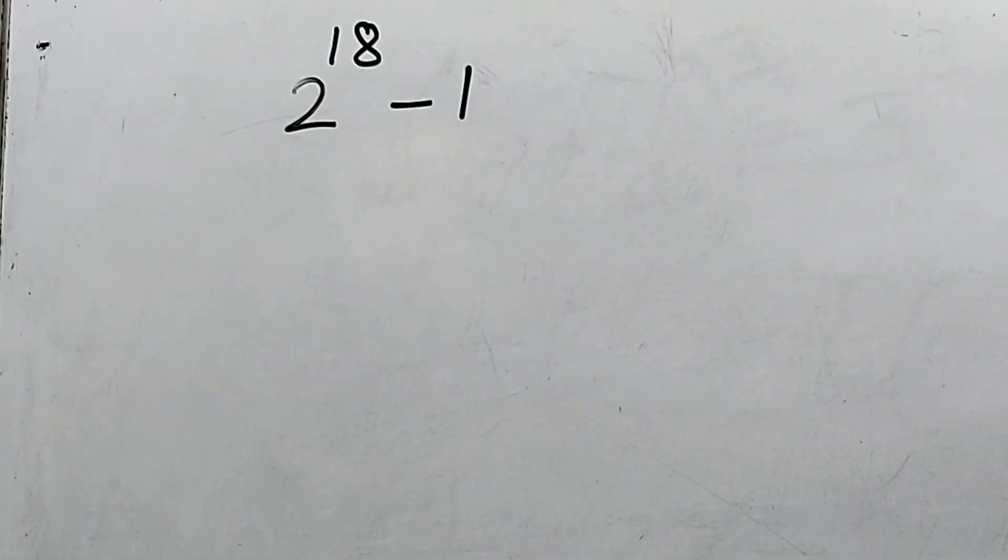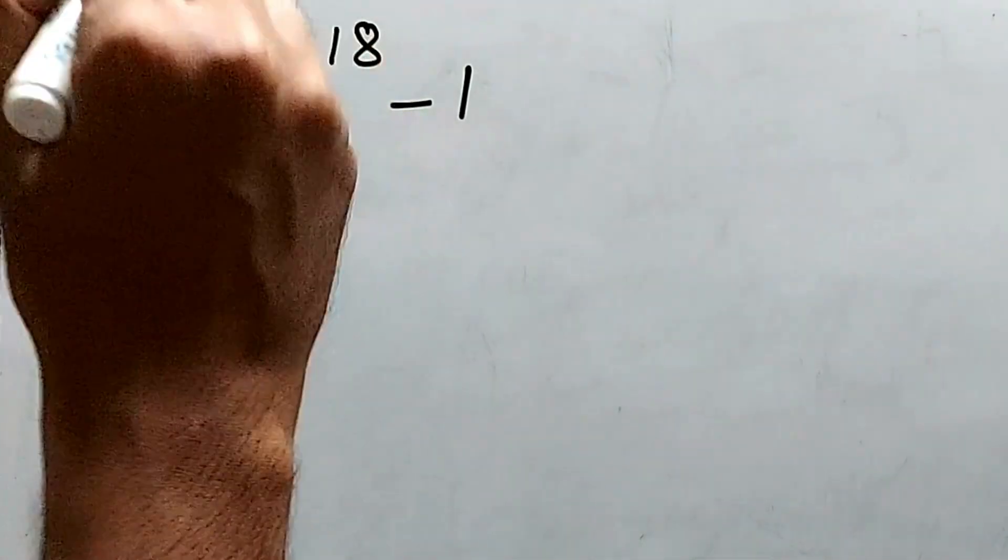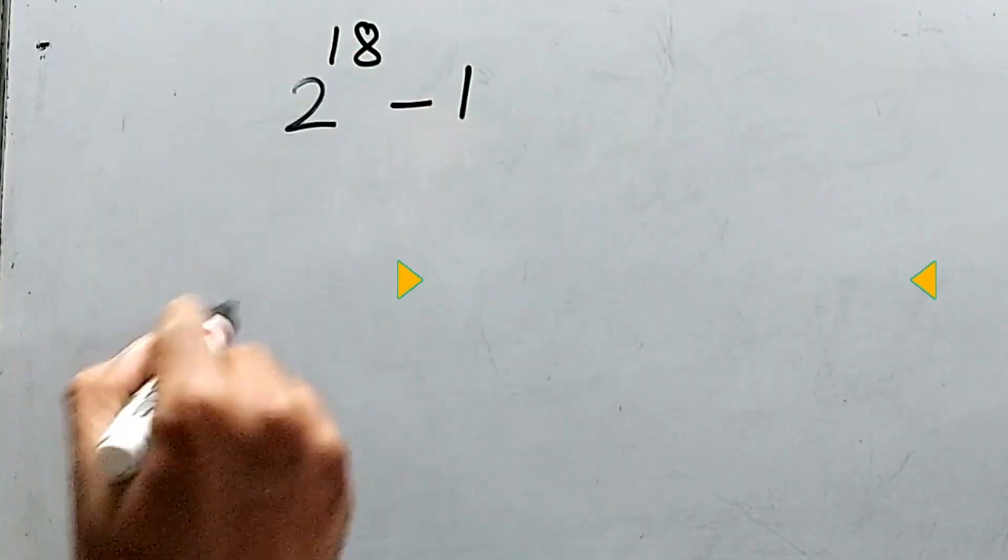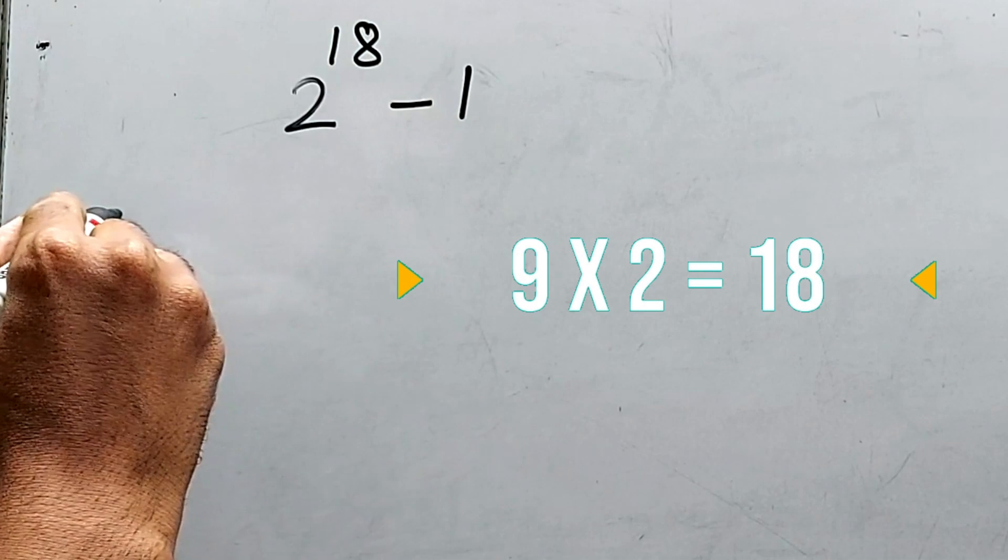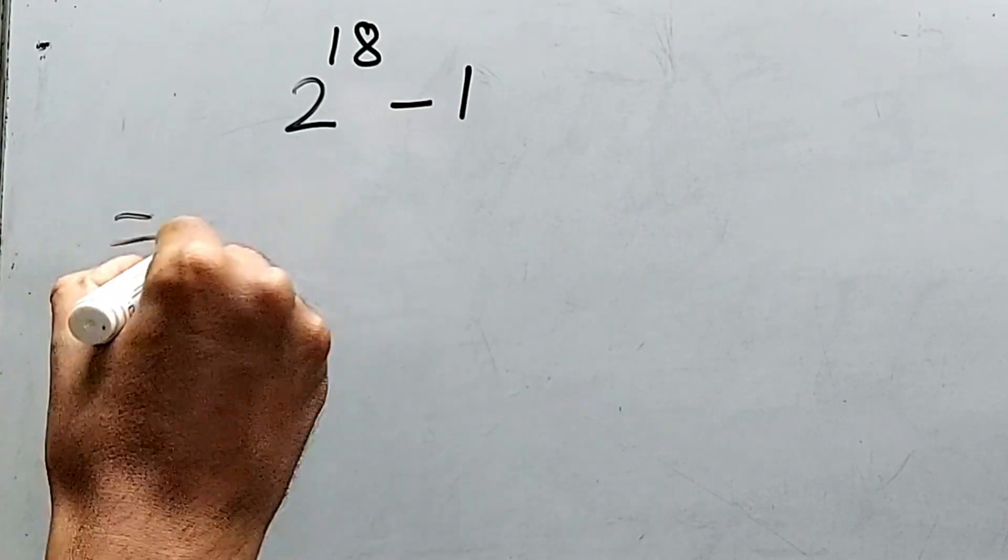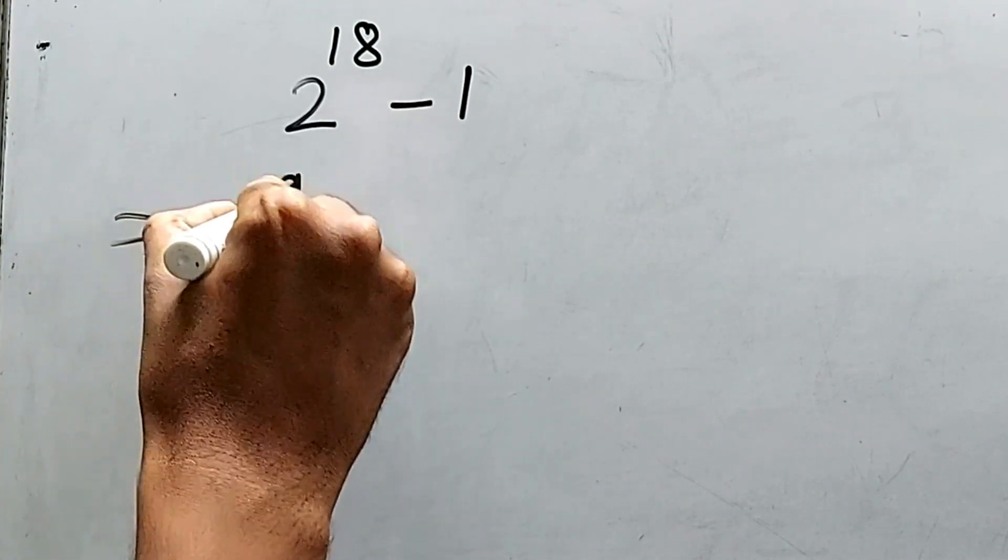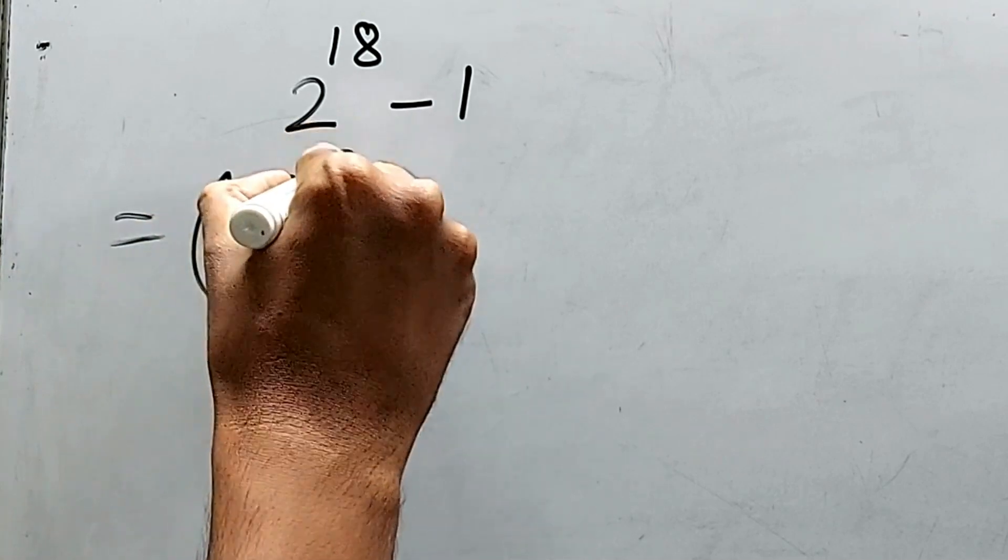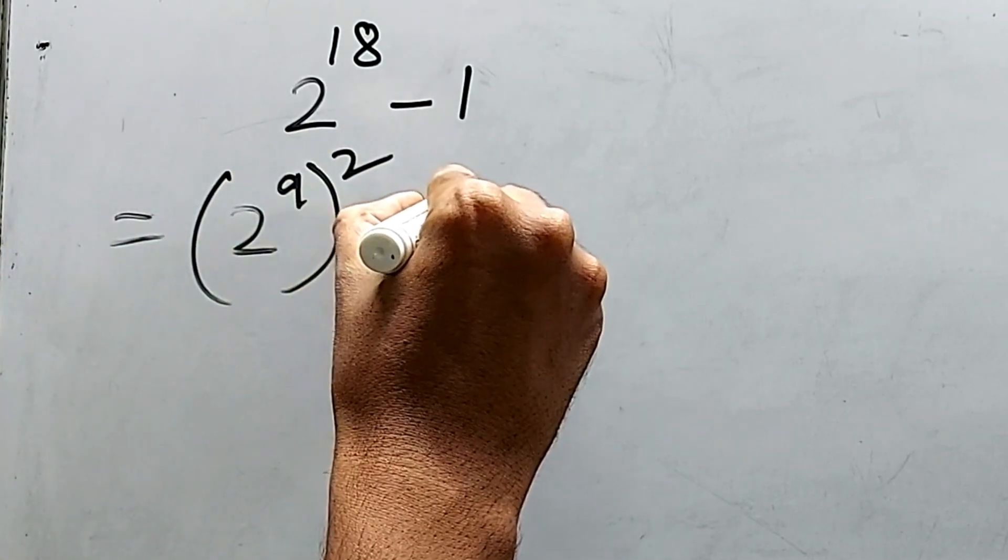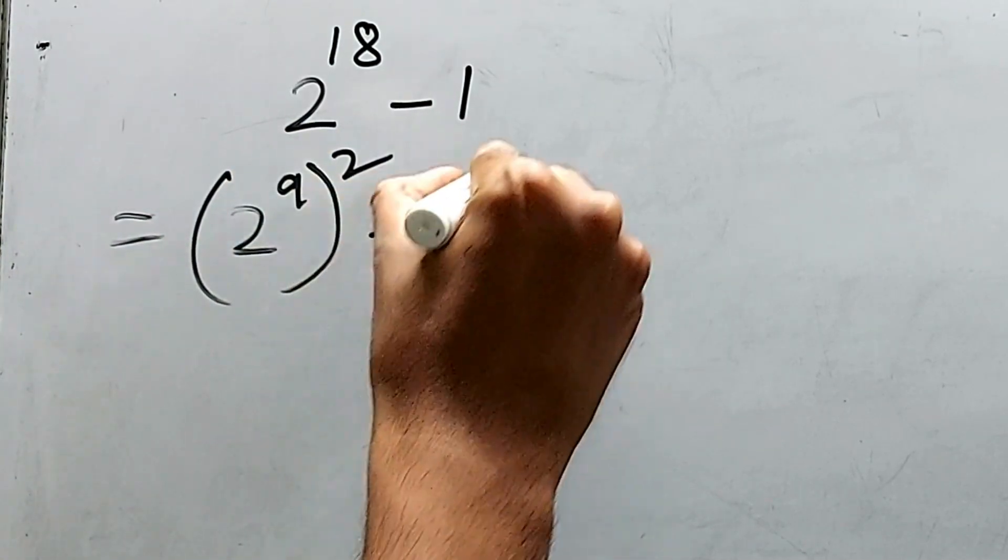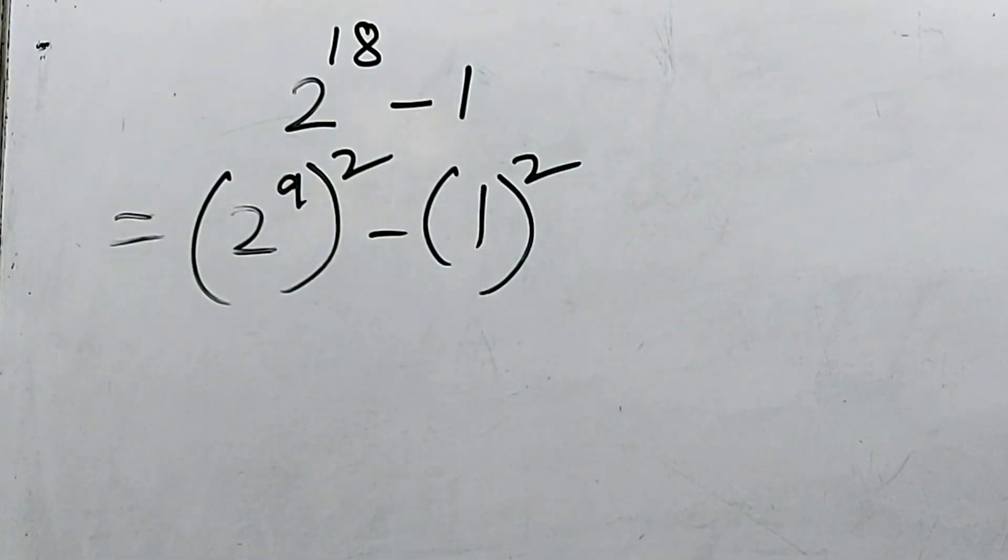2 to the power 18 minus 1. How to solve this? We know 9 into 2 is 18, so definitely we can write 2 to the power 9 whole square, and 1 we can write anything like 1 square.